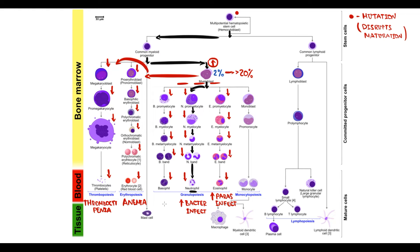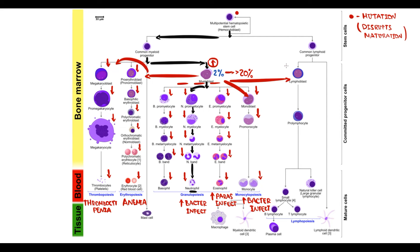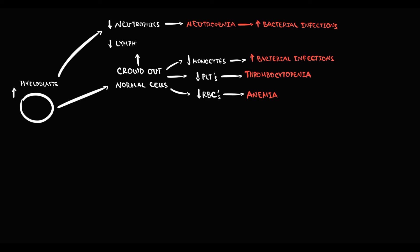Myeloblasts crowd out monocytic cells, causing monocytopenia, which predisposes patients to bacterial infections. Additionally, myeloblasts crowd out lymphoblasts from the bone marrow, causing lymphopenia, which increases the risk of viral infections. Neutropenia and lymphopenia together also increase the risk of fungal infections. In acute leukemia, all cells in the peripheral blood decrease — a condition called pancytopenia, which is quite specific for acute leukemia.